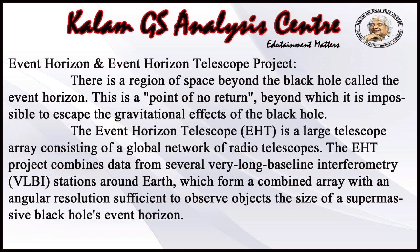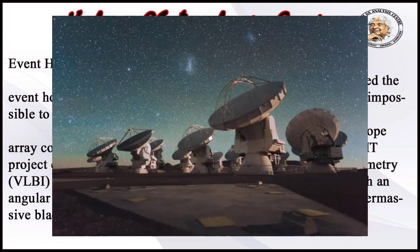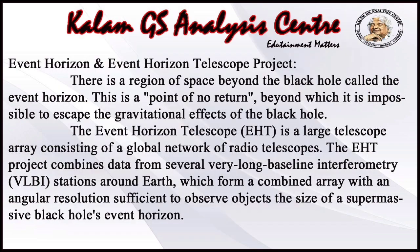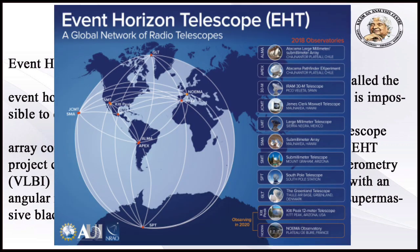Black Hole से परे अंतरिक्ष का एक क्षेत्र है जिसे Event Horizon कहा जाता है। ये एक बिना वापसी का बिंदू है जिसके आगे Black Hole के gravitational effects से बचना असंभव है। Event Horizon Telescope एक बड़ा telescope array है जिसमें Radio Telescope का Global Network शामिल है। Event Horizon Telescope पृथ्वी के चारों ओर कई बहुत लंबी baseline interferometry stations से data जोड़ती है।